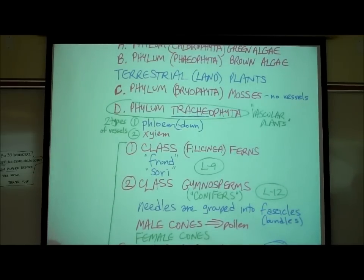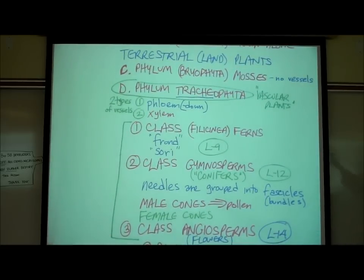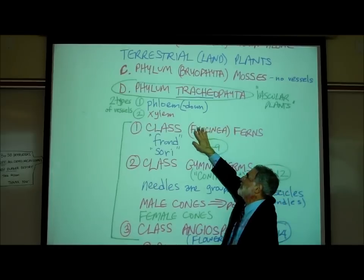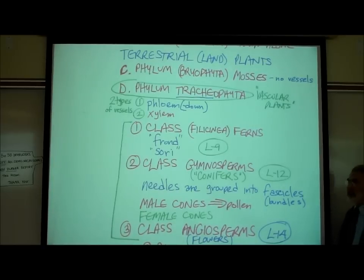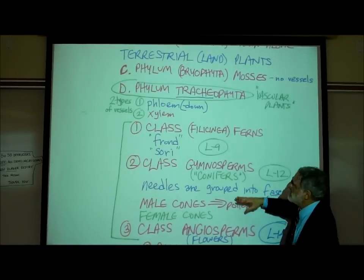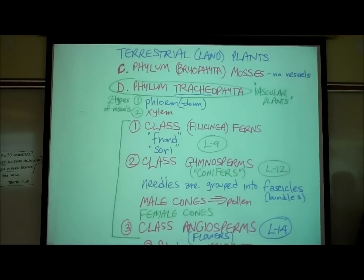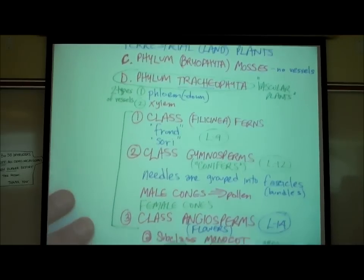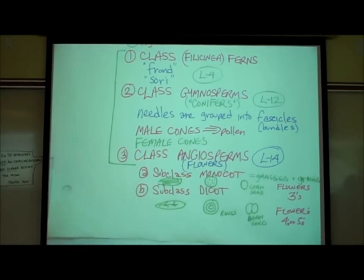We're going to divide this very important phylum of so-called vascular plants - and I do want you to know the word tracheophyta - we're going to divide them into three classes. Class ferns, technically the scientific name for fern is filicinae but we'll just say ferns. And secondly class gymnosperm or conifers. Those are like the plants and trees that have needles like pine trees.